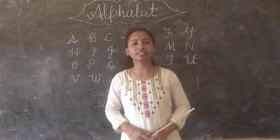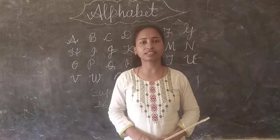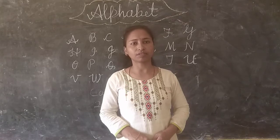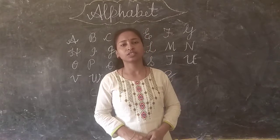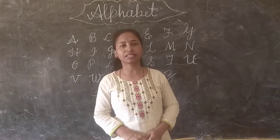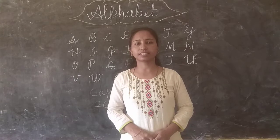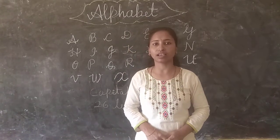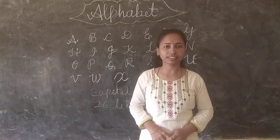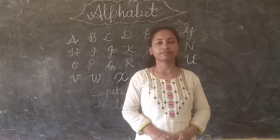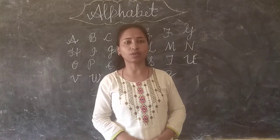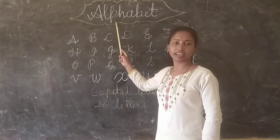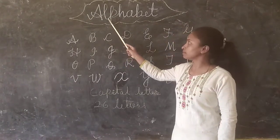Do you know children? In last class you have already learned about alphabet. So alphabet — the letters from A to Z are called alphabet. The letters from A to Z are called alphabet. So here I have written alphabet.